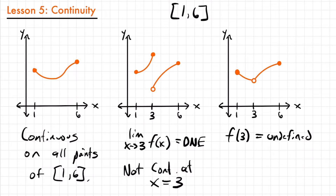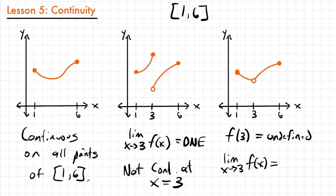Let's look at this from a calculus perspective and consider the limit as x approaches three. Looking from the right side, we find ourselves at y equals three when approaching x equals three. From the left side, we also find y equals three. So the left and right side limits are equal — we have a limit of three. But notice this limit isn't equal to the value of the function at x equals three, since the actual value is undefined. When the limit of the function is not equal to the value of the function at a certain point, that's an indicator the function might not be continuous there.